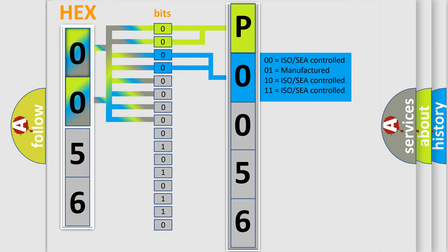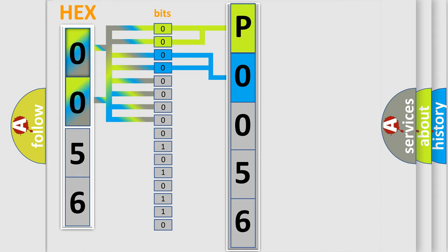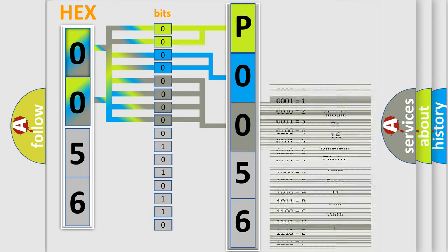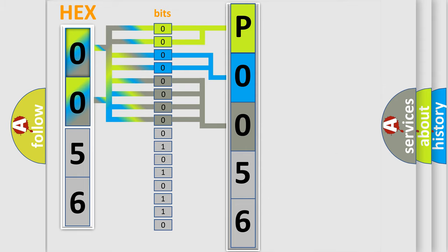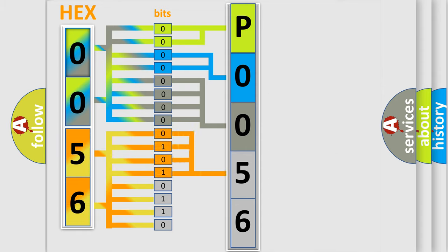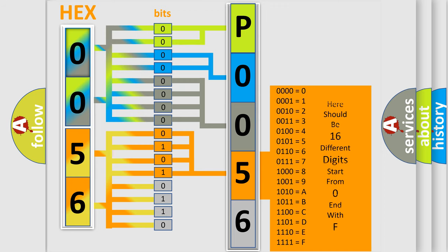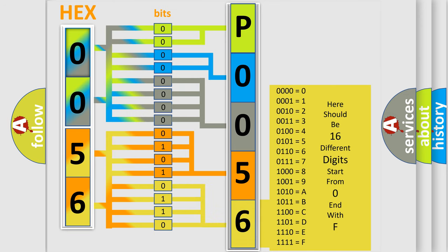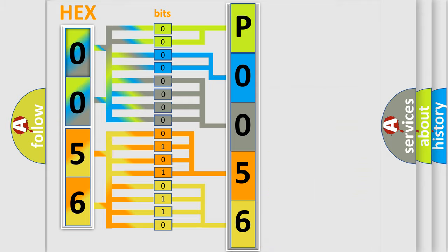The last bit styles of the first byte define the third character of the code. The second byte is composed of a combination of eight bits. The first four bits determine the fourth character of the code, and the combination of the last four bits defines the fifth character. A single byte conceals 256 possible combinations.